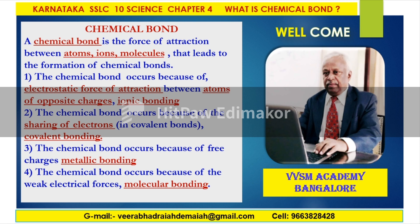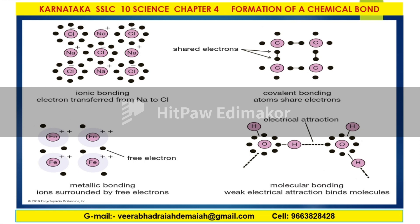You get different types of chemical bonds: ionic bond, covalent bond, metallic bond, molecular bond, etc. Ionic bonding involves electron transfer from sodium to chlorine. Covalent bonding involves the sharing of electrons. Metallic bonding involves bonds between free electrons. Molecular bonding involves the electrical attraction between two molecules.